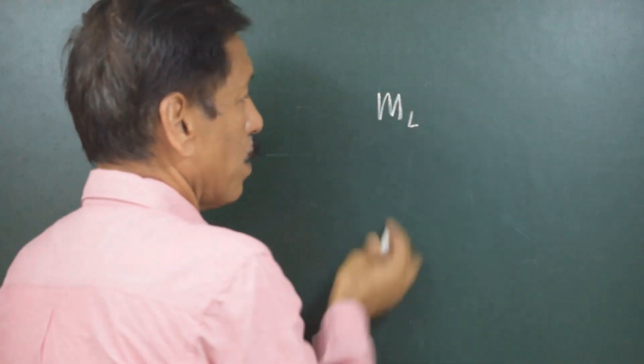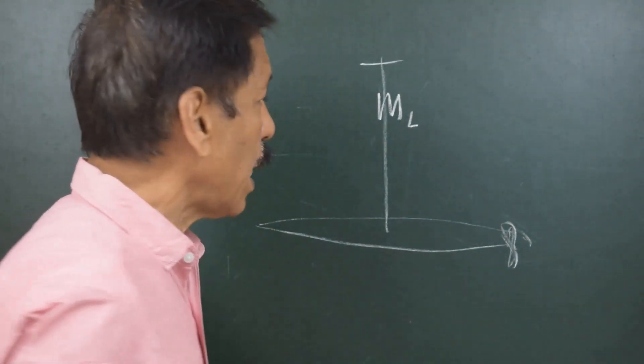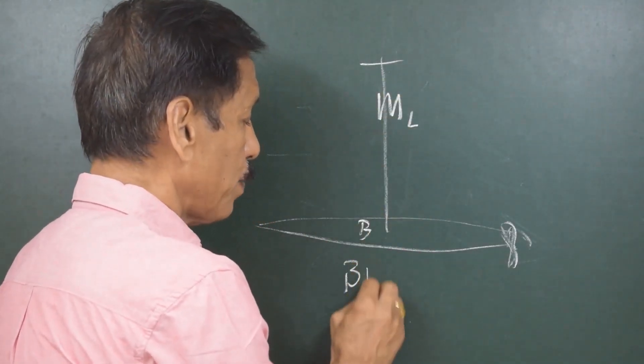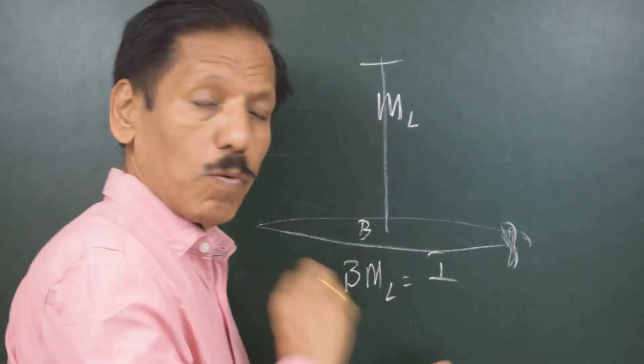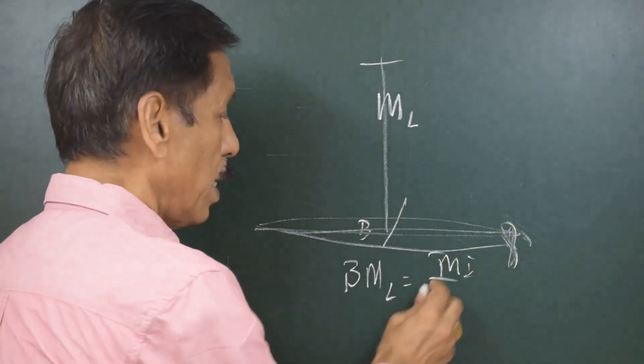Now what happens when a longitudinal moment is created? She will change the trim. But remember, a submarine's shape is such that it is long and initially it has got a long waterplane area. But if the submarine tilts, the waterplane area can considerably decrease. And when the waterplane area considerably decreases, the longitudinal metacenter position will come down, because the distance BML is the moment of inertia of the waterplane area about the amidships axis divided by the underwater volume.